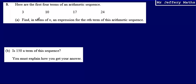This is question 8. We're told that the first four terms of an arithmetic sequence are 3, 10, 17, and 24. We're asked to find, in terms of n, an expression for the nth term of this arithmetic sequence.